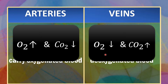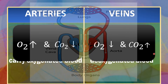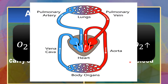By deoxygenated, we mean that the blood has a lower quantity of oxygen and a higher quantity of carbon dioxide as compared to oxygenated blood. The term 'generally' is used because in the case of pulmonary circulation, which is one part of double circulation, the pulmonary vein carries oxygenated blood from the lungs to the heart, while the pulmonary artery carries deoxygenated blood from the heart to the lungs.